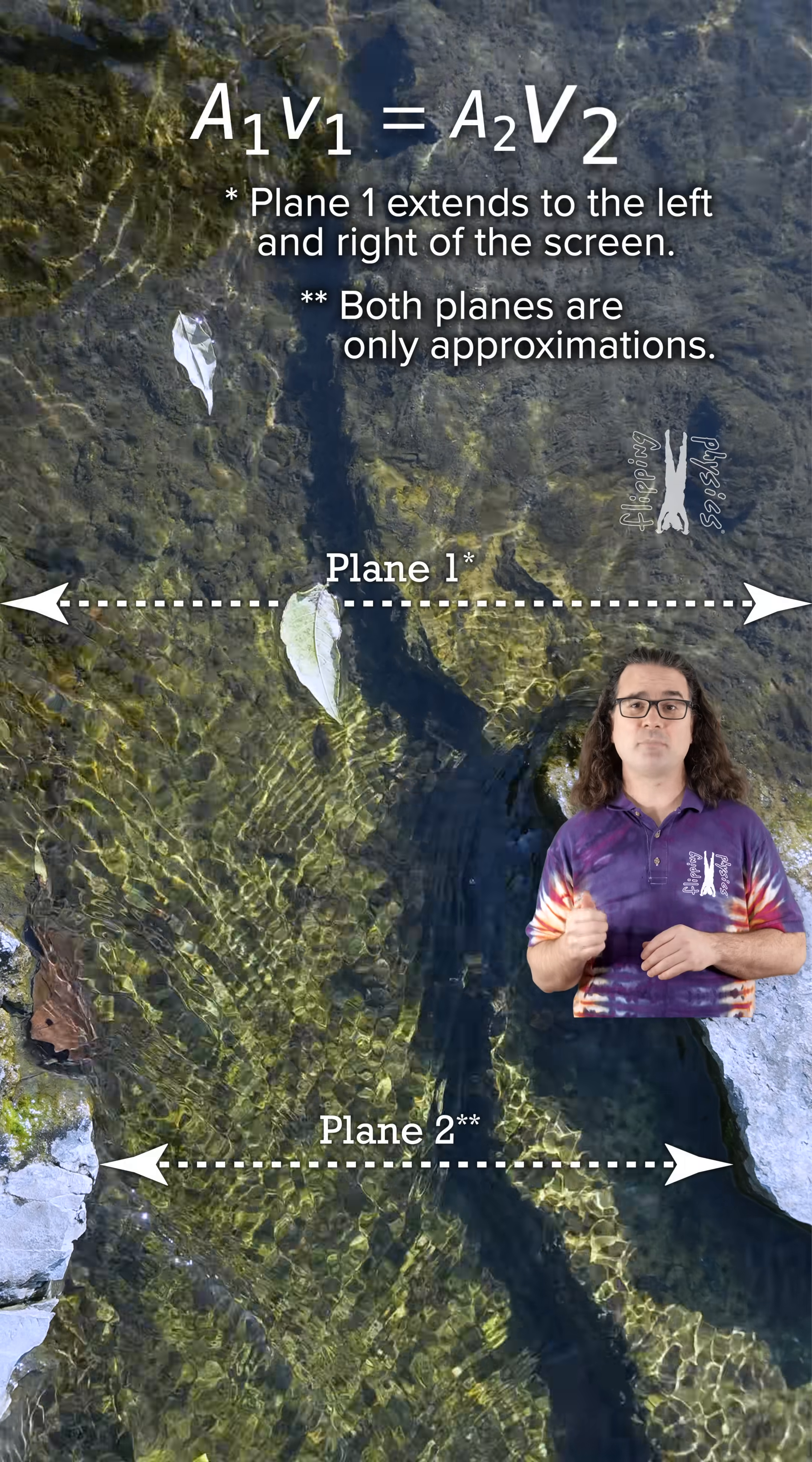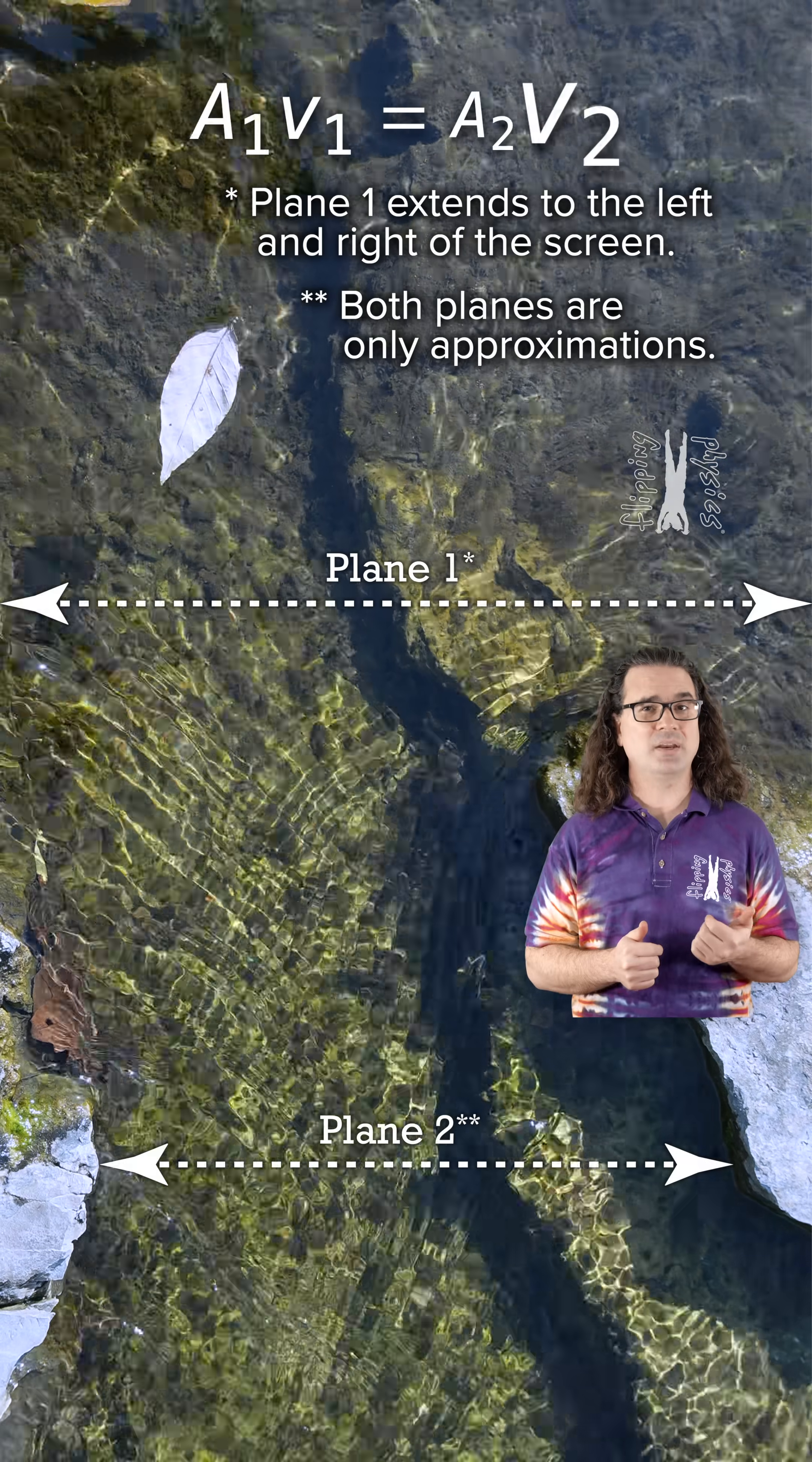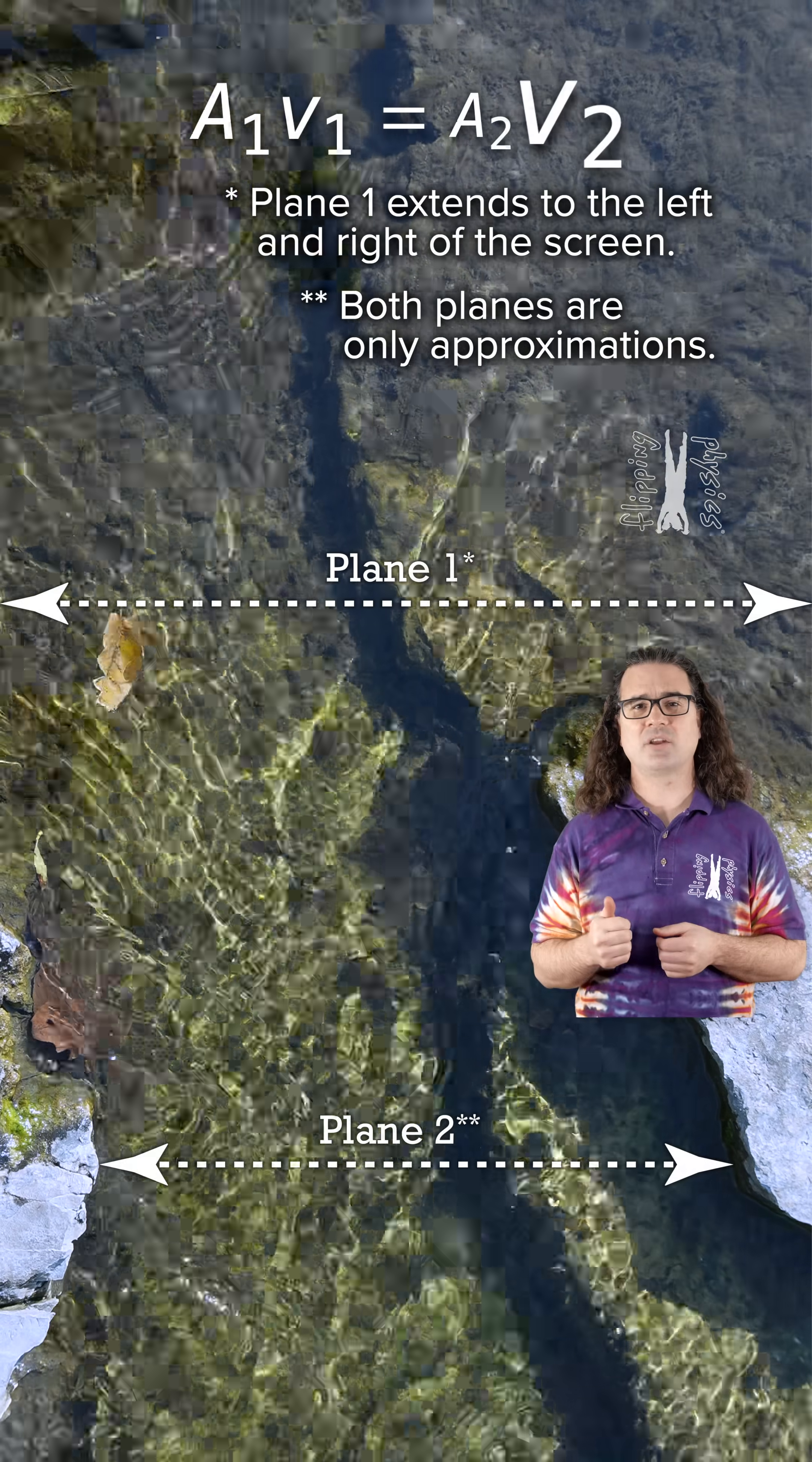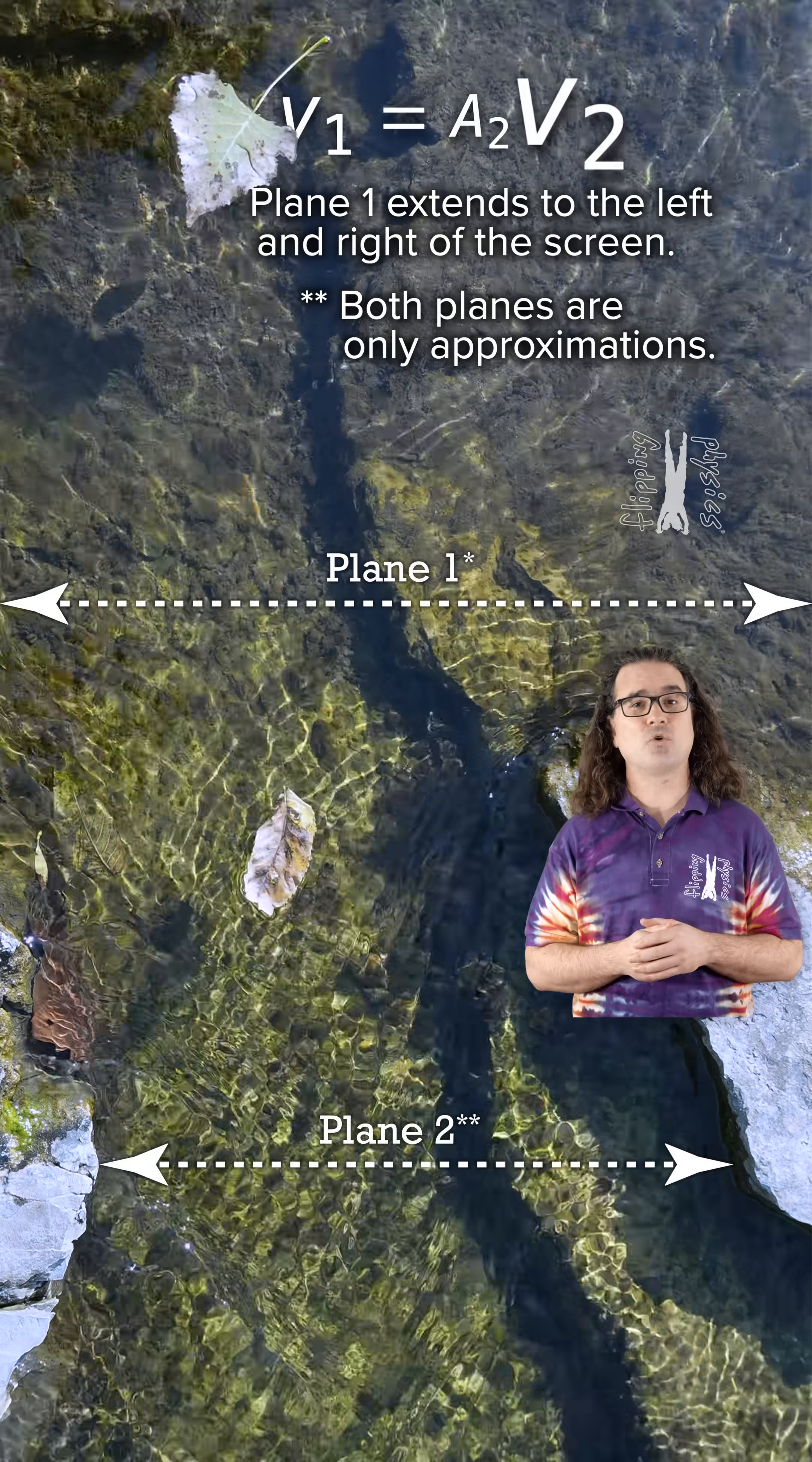The cross-sectional area of the river before the channel or plane 1 is larger than the cross-sectional area of the river in the channel or plane 2.